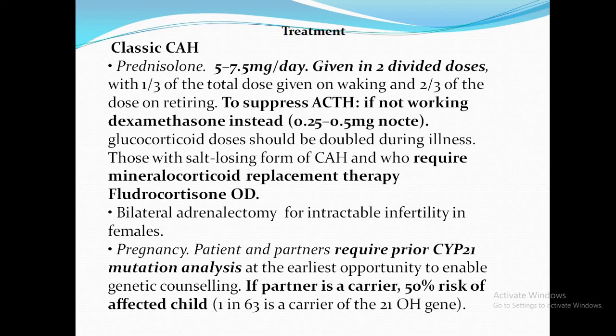Treatment of classic CAH uses prednisolone as the drug of choice, given in two divided doses — one third on waking and two thirds on retiring — to suppress ACTH, which peaks during late hours to early morning. This is the opposite dosing strategy to adrenal insufficiency, where a higher dose is given in the morning. If prednisolone is insufficient to suppress ACTH, dexamethasone can be used. During illness, stress dosing applies — doses are usually doubled.